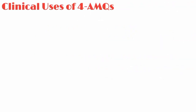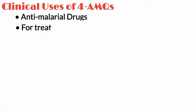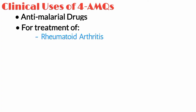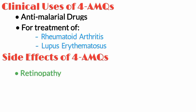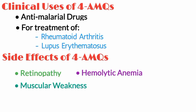4-aminoquinolines are commonly used as antimalarial drugs and also for the treatment of rheumatoid arthritis and lupus erythematosus. Main side effects of 4-aminoquinolines include retinopathy, hemolytic anemia, muscular weakness, porphyria, and liver toxicity.